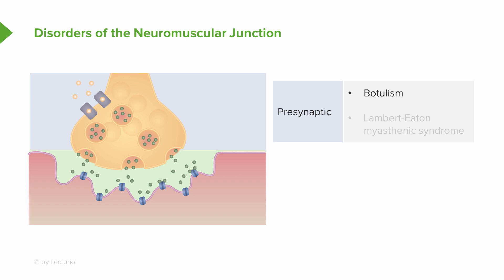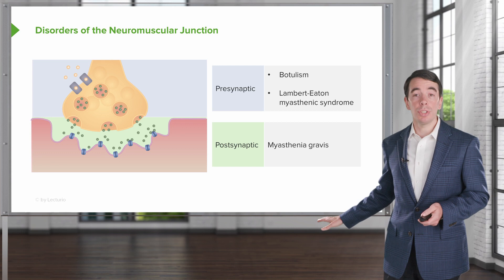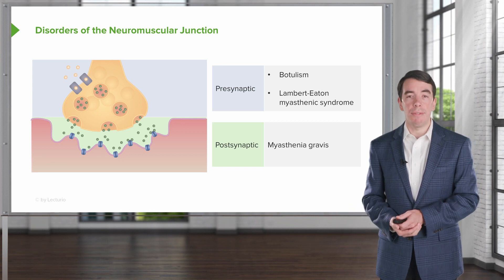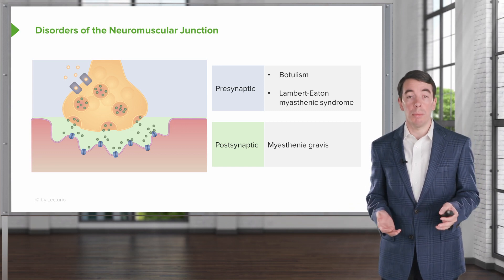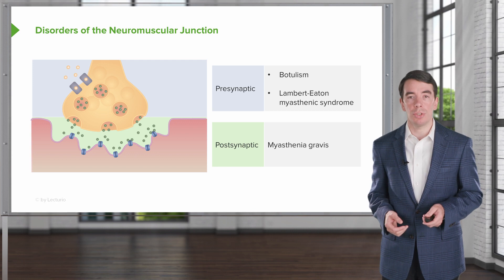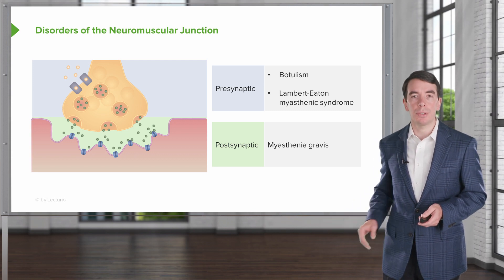Some of the conditions we'll learn about include botulism — a presynaptic disorder that affects the neuromuscular junction and presents with junctional weakness. Lambert-Eaton Myasthenic syndrome is also a presynaptic disorder, affecting the calcium channels on the presynaptic terminus. In the postsynaptic area, we think of myasthenia gravis, one of the most common neuromuscular junction conditions, and it affects the postsynaptic terminus.